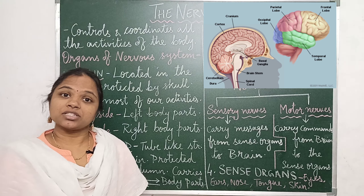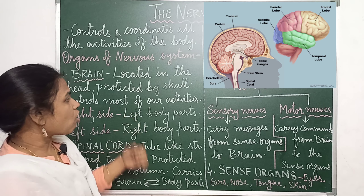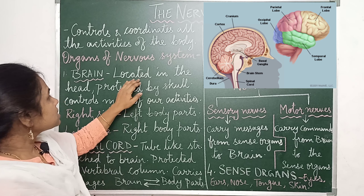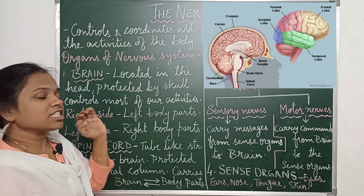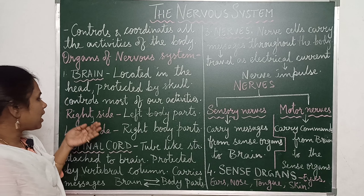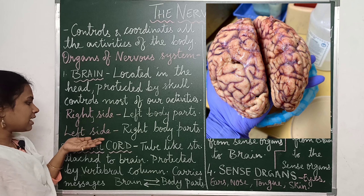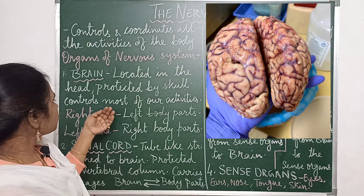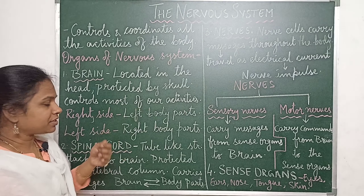Now coming to the brain. The brain is a delicate organ and it is a very important part of our body, as it controls almost most of the activities of our body. It is located in the head region and is in turn protected by a bony cage which is called the skull. This skull is also called the cranium. The brain is protected by the skull or the cranium, and it has two main parts — the right side and the left side.